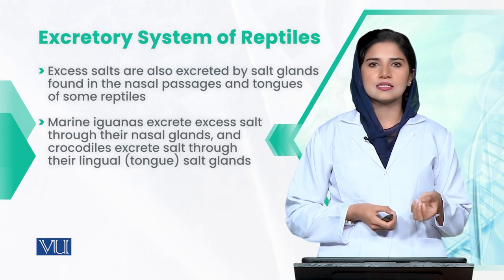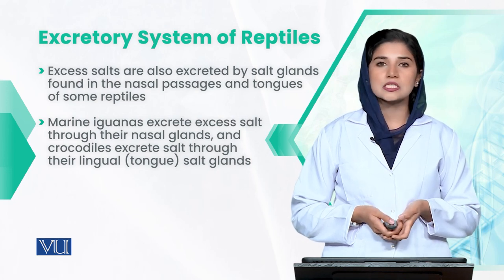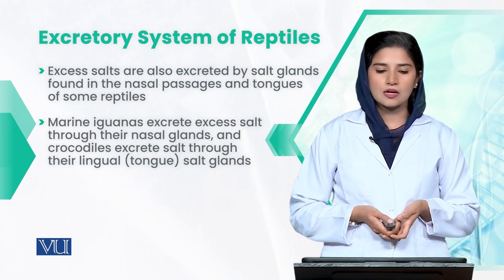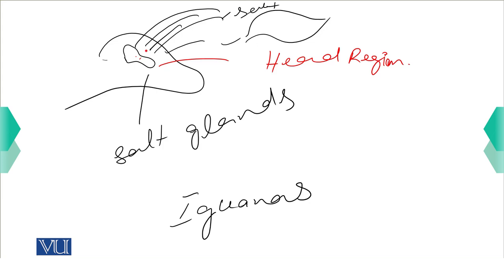Other than kidneys, reptiles have different glands. Salt glands are found in different locations. For marine iguanas, most salt glands are found in the head region, where water and salt are removed in liquid form.